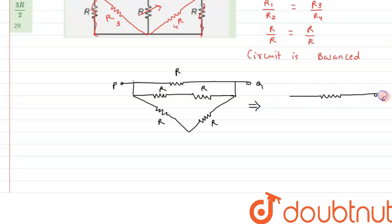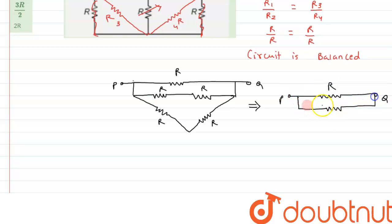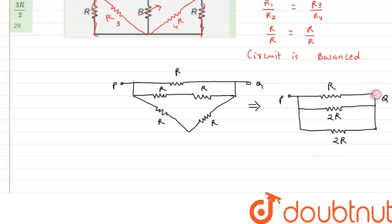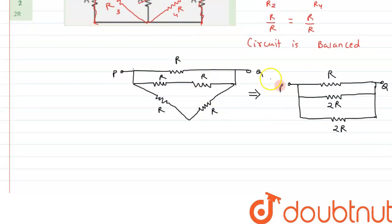In the equivalent circuit: here is one resistance R, here is point Q, here is point P, and here is resistance R. The two series resistances R + R give 2R on one branch, and similarly the other two series resistances also give 2R. So we have resistance R in one path and 2R in parallel with 2R in another.